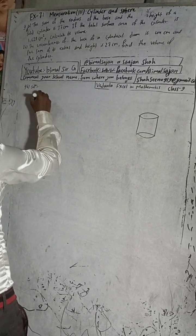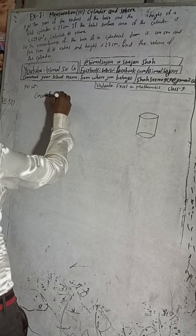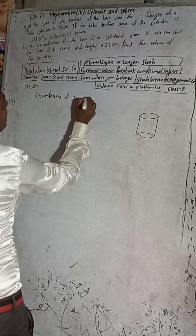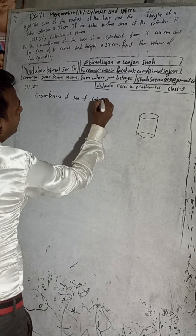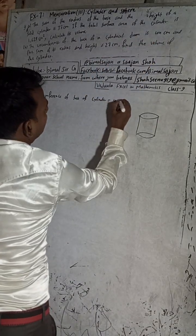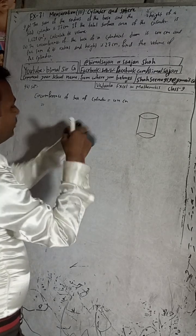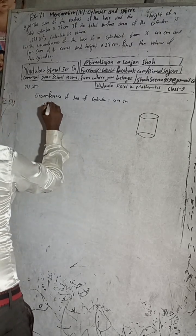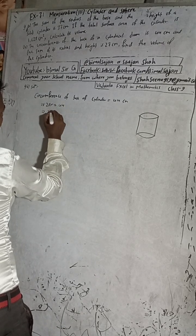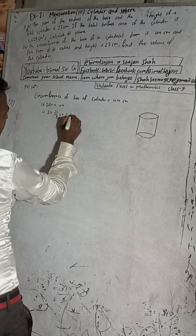The circumference of the base of the cylinder is equal to 44 cm. The formula for circumference is 2πr. So 2πr = 44, which means 2 × (22/7) × r = 44.